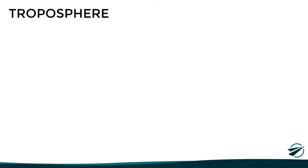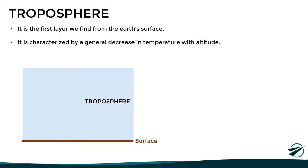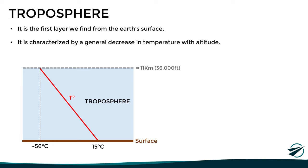Let's start with the troposphere, which is the first layer we find from the surface. One of its most important characteristics is that the temperature here decreases with altitude, starting from an average of 15 degrees Celsius at sea level and reaching values around minus 56 degrees in its upper levels. Although the altitude of the troposphere varies depending on factors such as latitude, season, and type of surface, on average it is assumed to be around 11 kilometers or 36,000 feet.